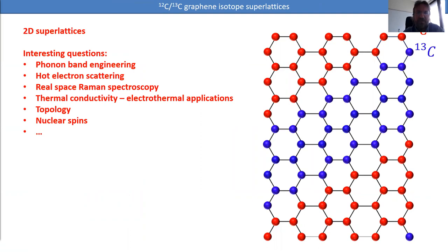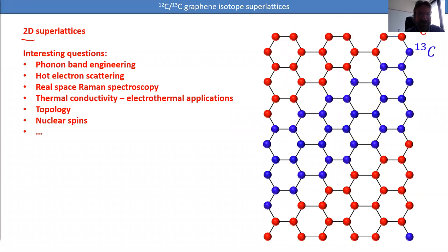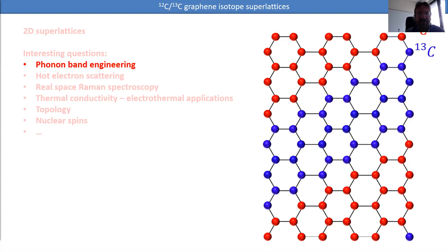I want to focus on the 2D nature of superlattices and talk about the carbon-12 and carbon-13 graphene superlattice. There are a few interesting questions I'd like to introduce. If there are any questions, please interrupt — as long as it's a little kinder than the debate last night. I'm happy to take questions in between, or you can use the chat.